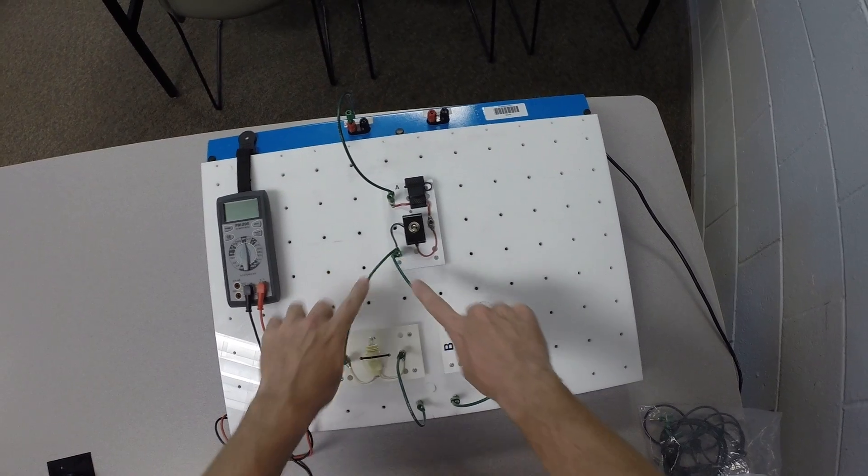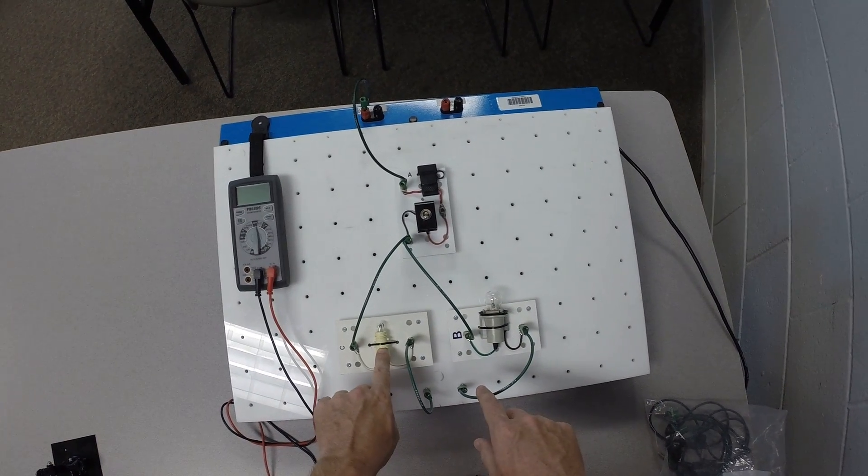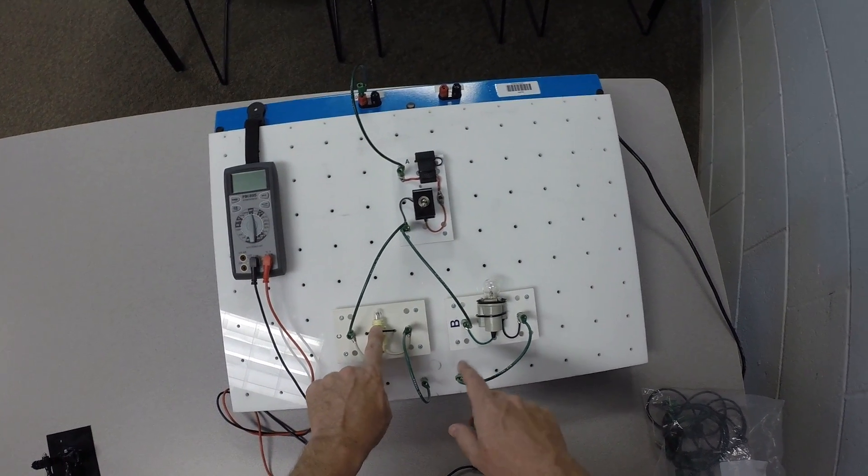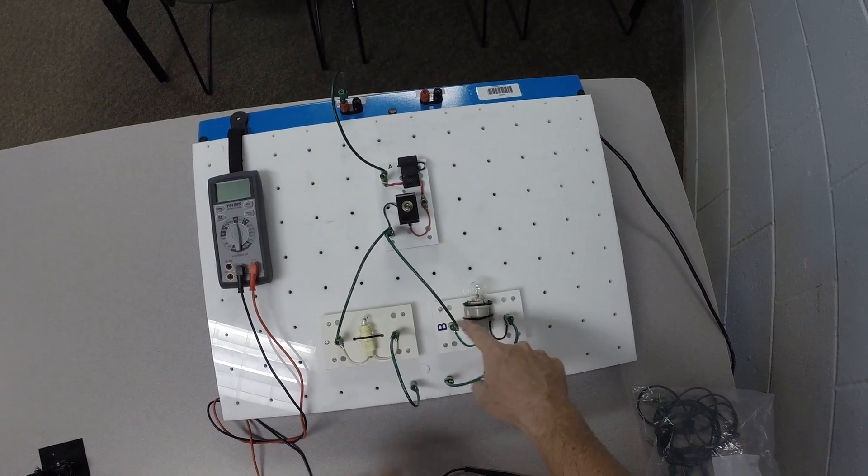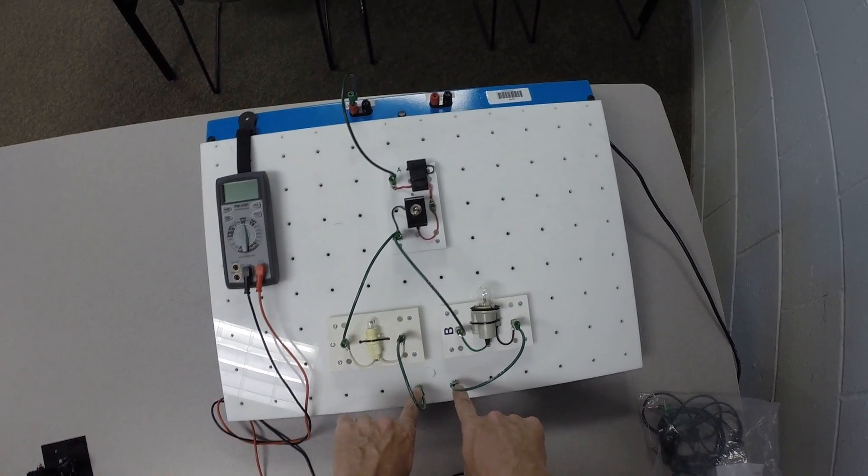There's two different paths. One goes through this bulb, which is like a marker light bulb. The other one goes through this bulb, which would be like a tail light bulb, and they both come back to ground.